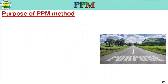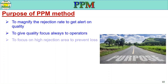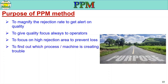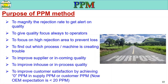The purposes of the PPM method are: to magnify the rejection rate to get alert on quality; to give quality focus always to operators; to focus on high rejection areas; to prevent loss; to find out which process or machine is creating trouble; to improve supplier or incoming quality; to improve in-house or in-process quality; and to improve customer satisfaction by achieving 0 PPM in supply or customer PPM. Currently, OEM expectation is less than 20 PPM.